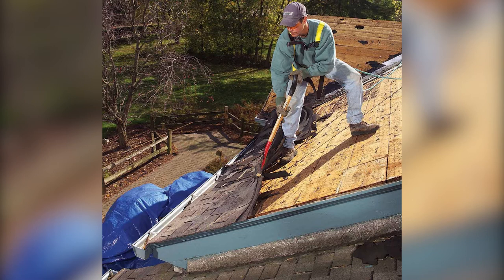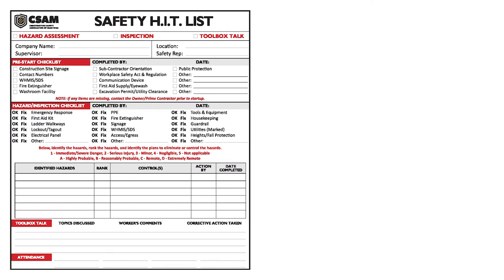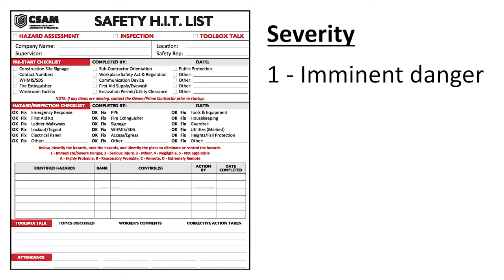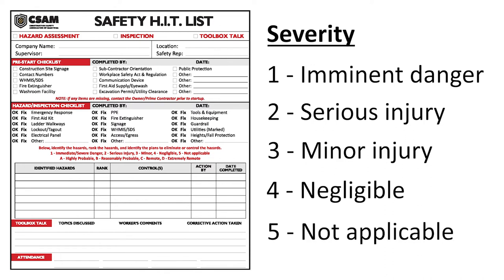The intent of your hazard assessment is to identify existing and potential hazards, ranked according to severity and probability. The numbers represent the severity of an incident: 1 means imminent danger — a very high risk of something catastrophic happening; 2 is a serious injury requiring hospital care; 3 is a minor injury that could be attended to by your first aid kit; 4 is negligible — the worker could, in essence, walk it off in a well-controlled environment; and 5 is not applicable — if a listed hazard does not apply to your scope of work for that day or task, you can rank it as a 5.